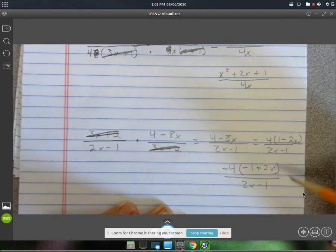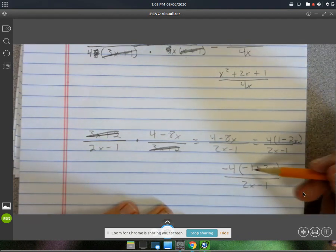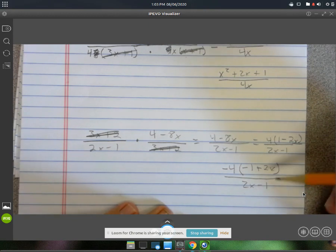Now, this and this are identical. They are the same thing. Instead of negative 1 plus 2x, you could rewrite that as 2x minus 1. They are identical.